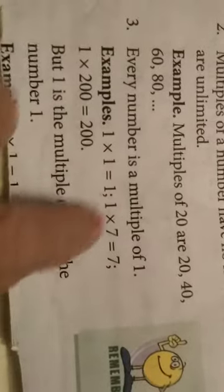Every number is a multiple of 1. So, 1 into 1 is 1, 1 into 7 is 7, 1 into 200 is 200. Every number is the multiple of 1.